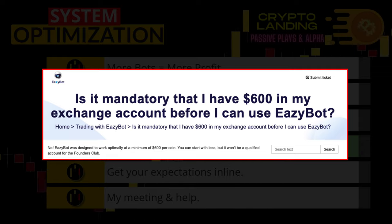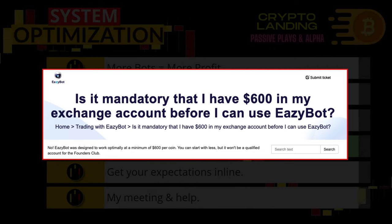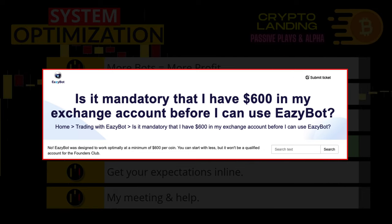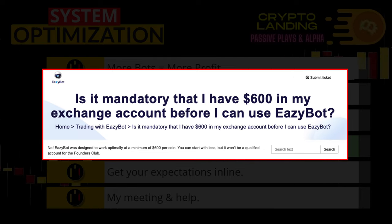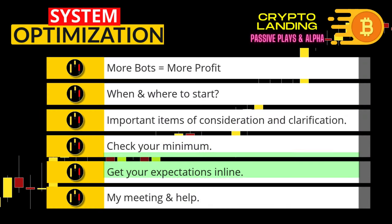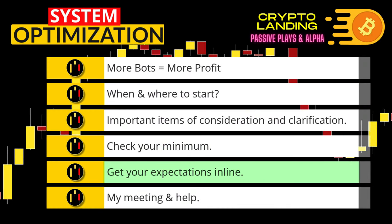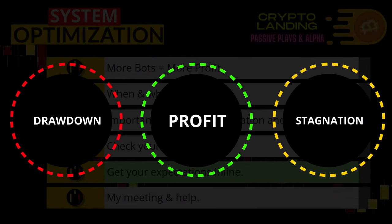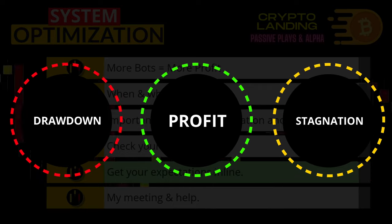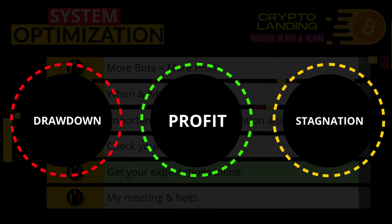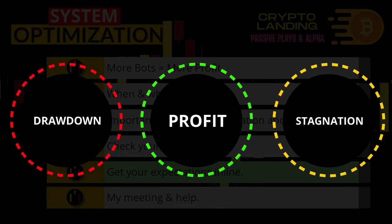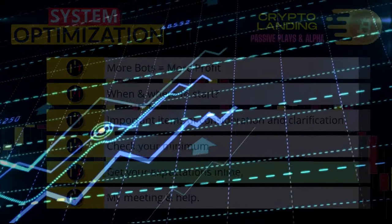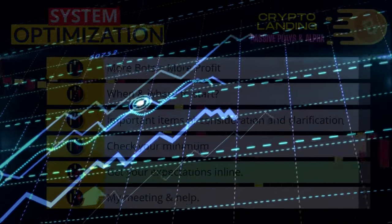Fourth, the individual bot balance is up to you. EasyBot recommends a $600 minimum per bot. These balances are there to protect your market position — specifically to withstand bearish impulsive moves. Fifth, a trading system like a trading bot is going to have periods of drawdown, profit, and stagnation. The key is to just let the system — in this case the bot — do what it does. Some weeks will be much better than others.